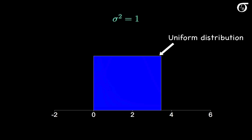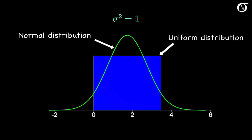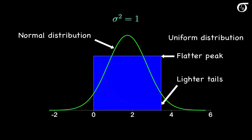Here we're going to sample from the distribution in blue, which is a uniform distribution. I've fixed the lower and upper bounds such that the variance is 1. For perspective, I'm superimposing a normal curve in green that has the same mean and variance. Compared to a normal distribution with the same variance, this uniform distribution has a flatter peak and lighter tails — less area far out in the tails. Because of this, we say that the uniform distribution has a lower kurtosis than the normal distribution, and that has some implications for the sampling distribution of the sample variance. One major implication is that we're not going to get extreme values from a uniform distribution, so the sample variance will not take on large values as often as it does when sampling from a normal distribution.